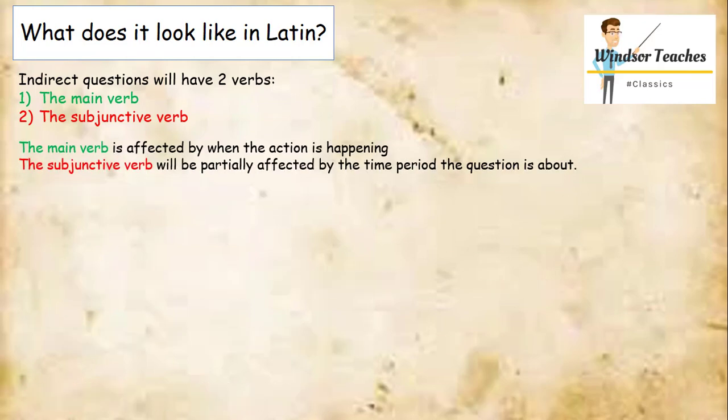So let's now get a little bit more context for what indirect questions are going to look like in Latin, and the way in which we might translate them. So indirect questions will have two verbs. They will have a main verb, and they will have the subjunctive verb. The main verb is affected by when the action is happening, but the subjunctive verb will be partially affected by the time period the question is about.